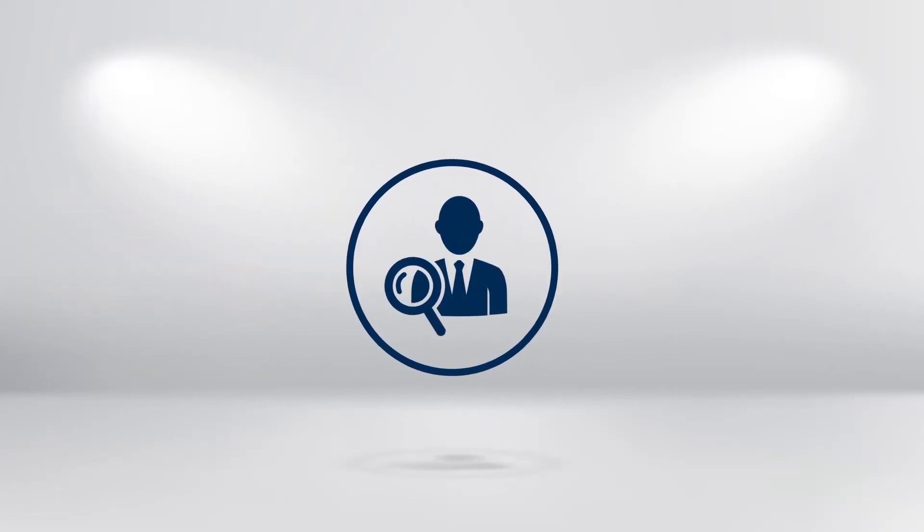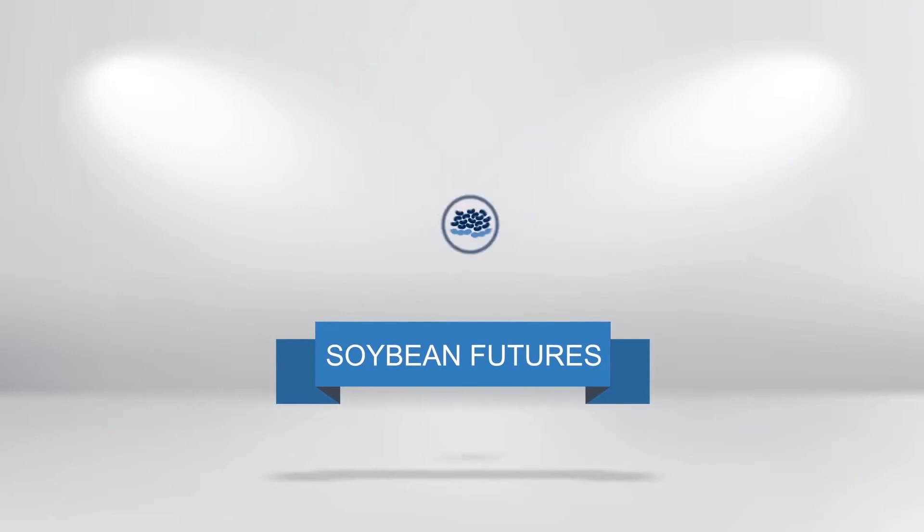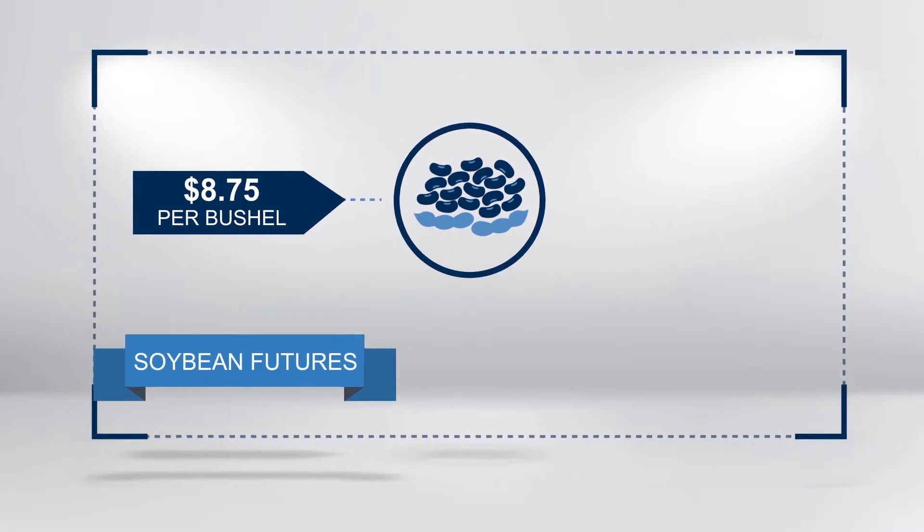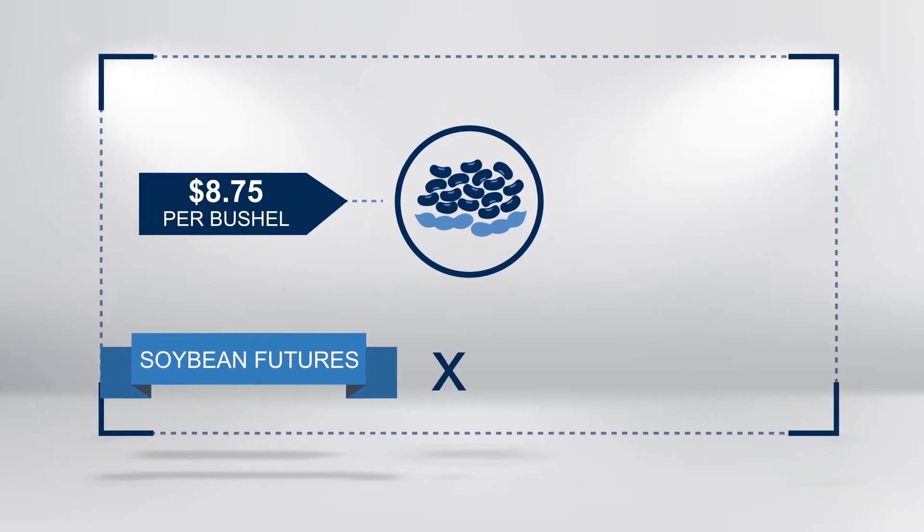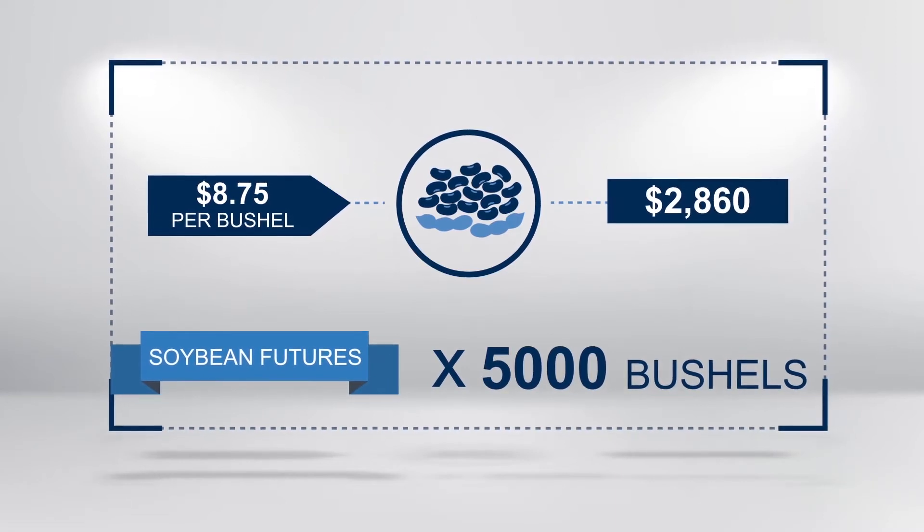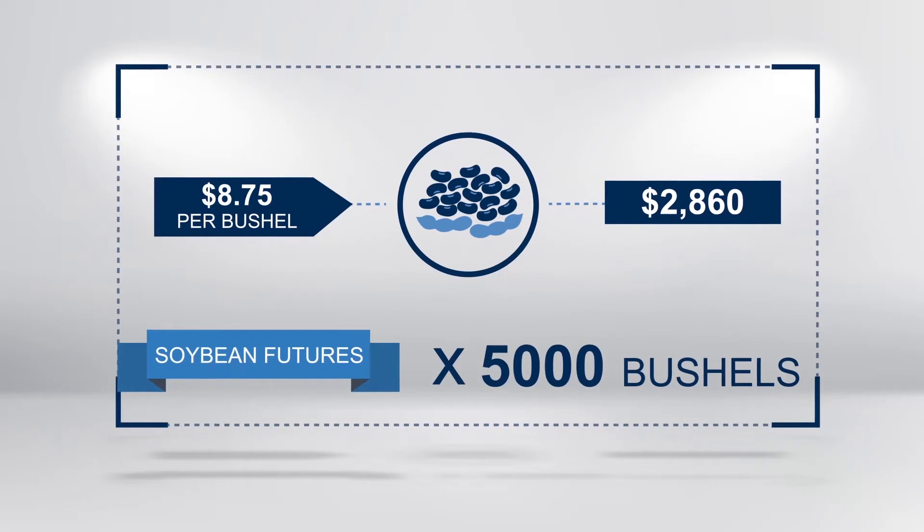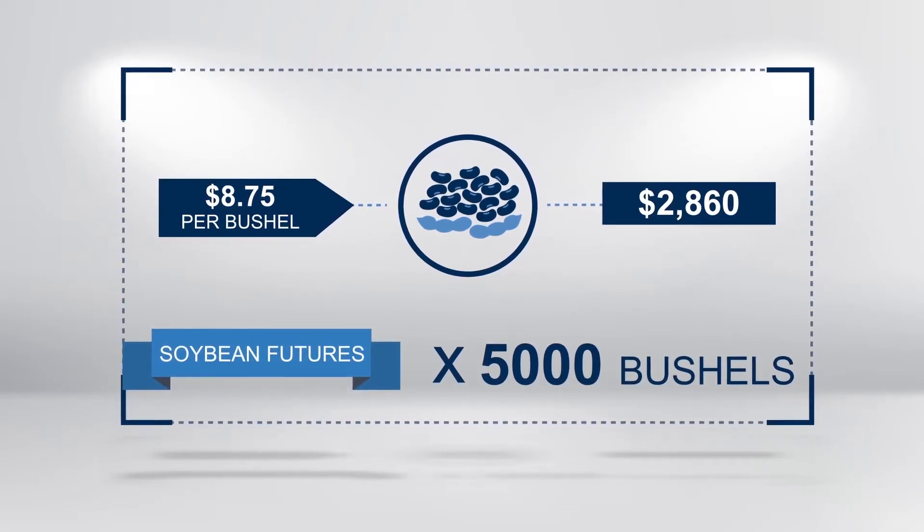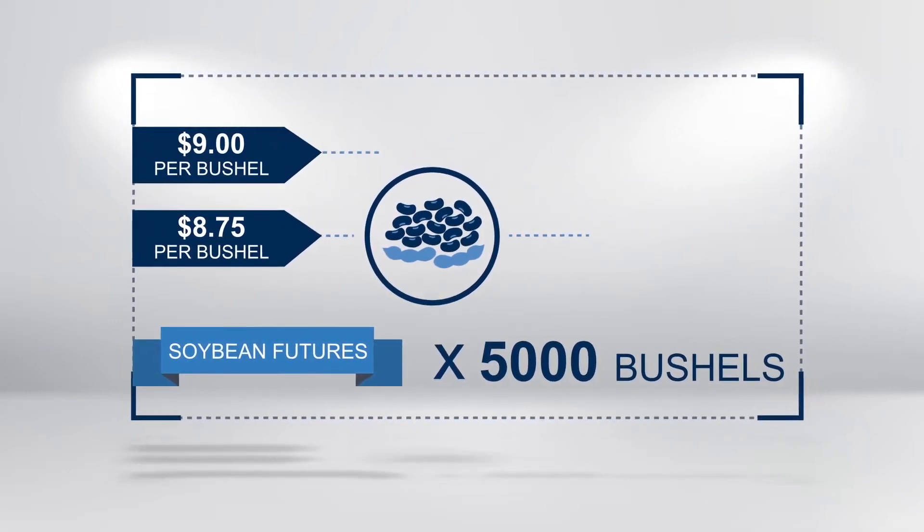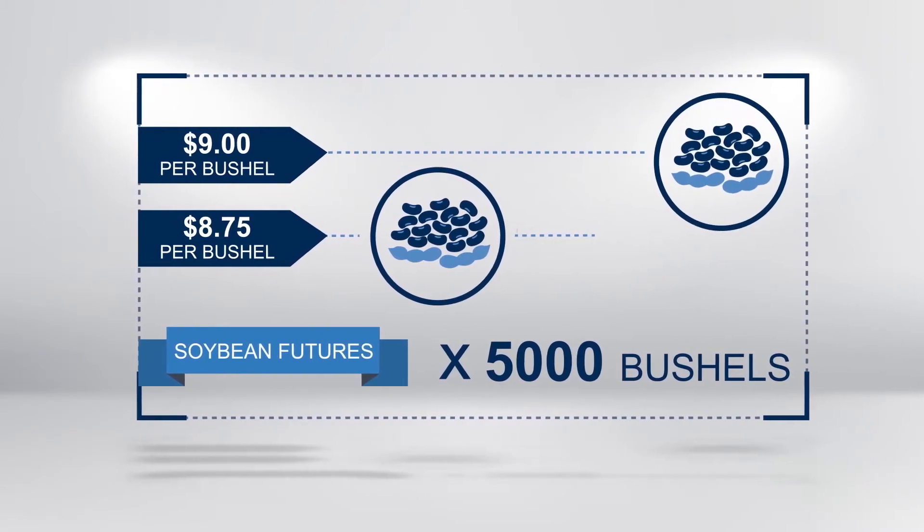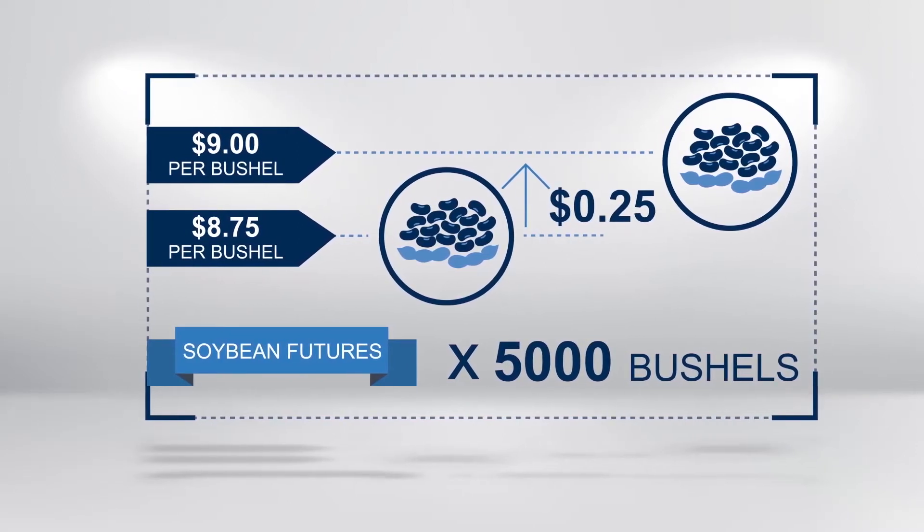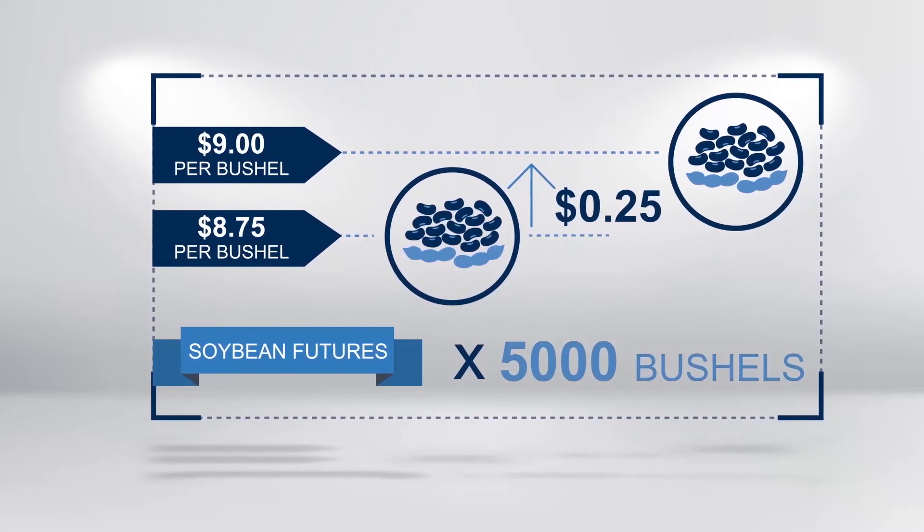In October, a speculator bullish on soybeans purchases one November Soybeans Futures for $8.75 per bushel. Each Soybeans Futures contract represents 5,000 bushels and would require an initial margin of $2,860. To buy that contract, $2,860 would be debited from his account and held. In November, the price of soybeans has moved up to $9 per bushel. The difference of $0.25 per bushel is what the trader could realize as profit, or $0.25 times 5,000 bushels, which equals $1,250.